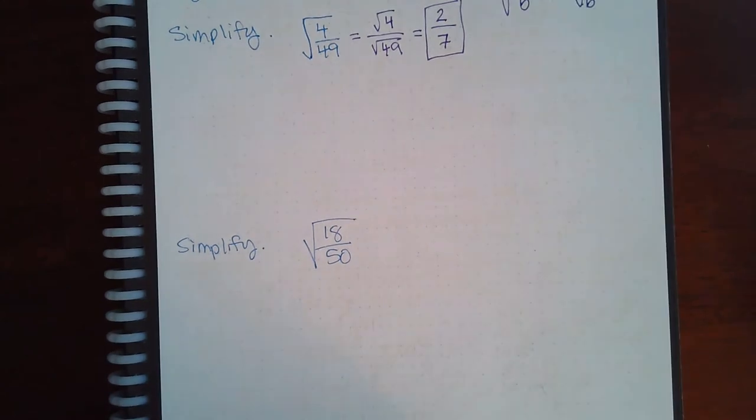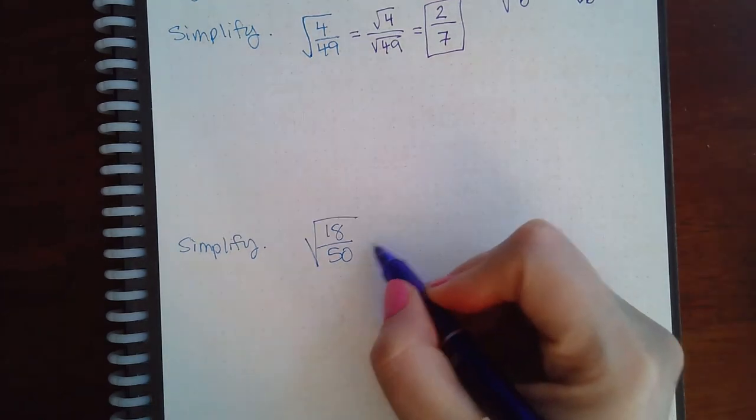Similarly, we could do the same here. However, before you do that, I would simplify your fraction as much as possible before you apply the square root rule or square root property. For this problem, you can reduce the 18 and the 50 by 2.